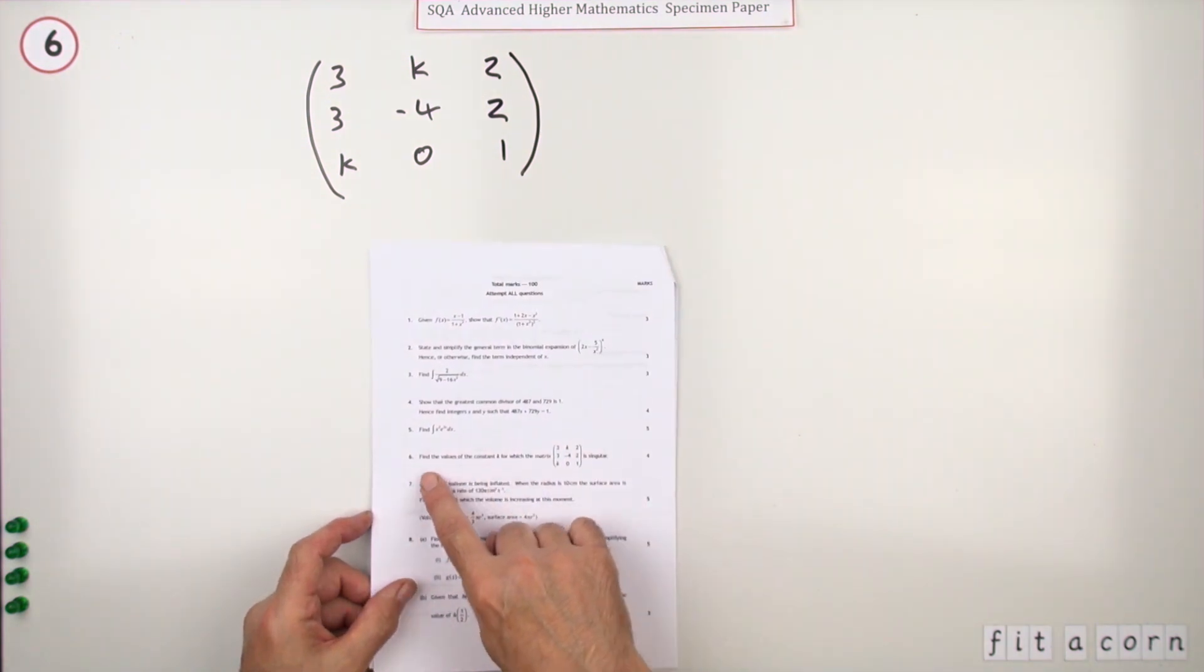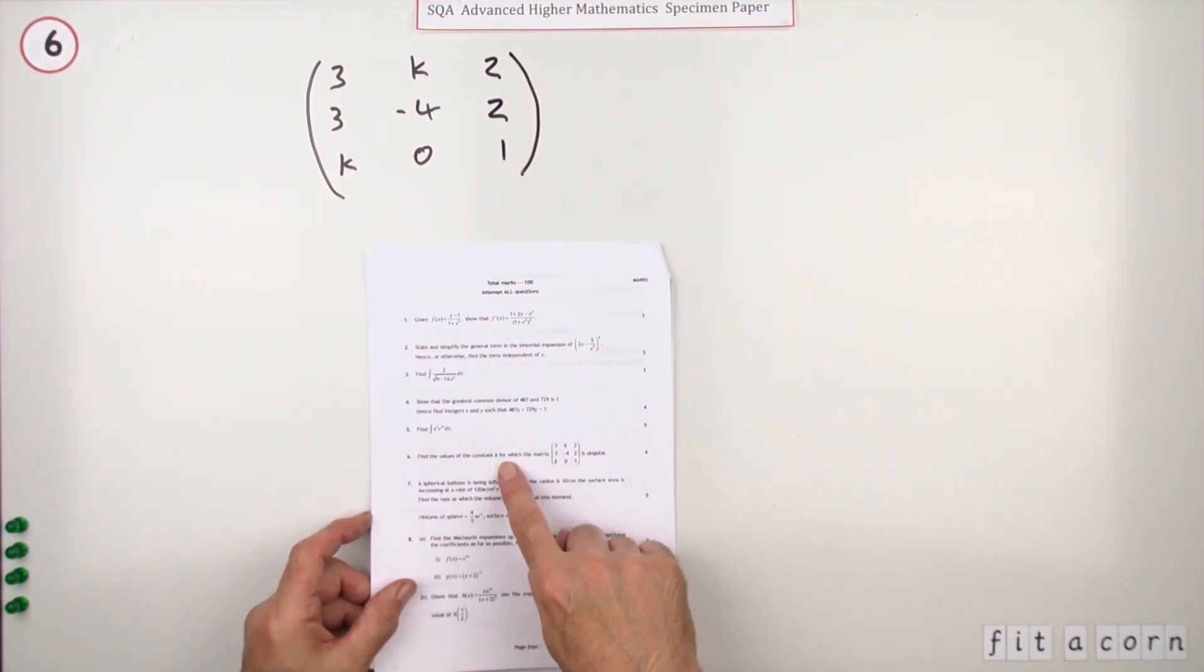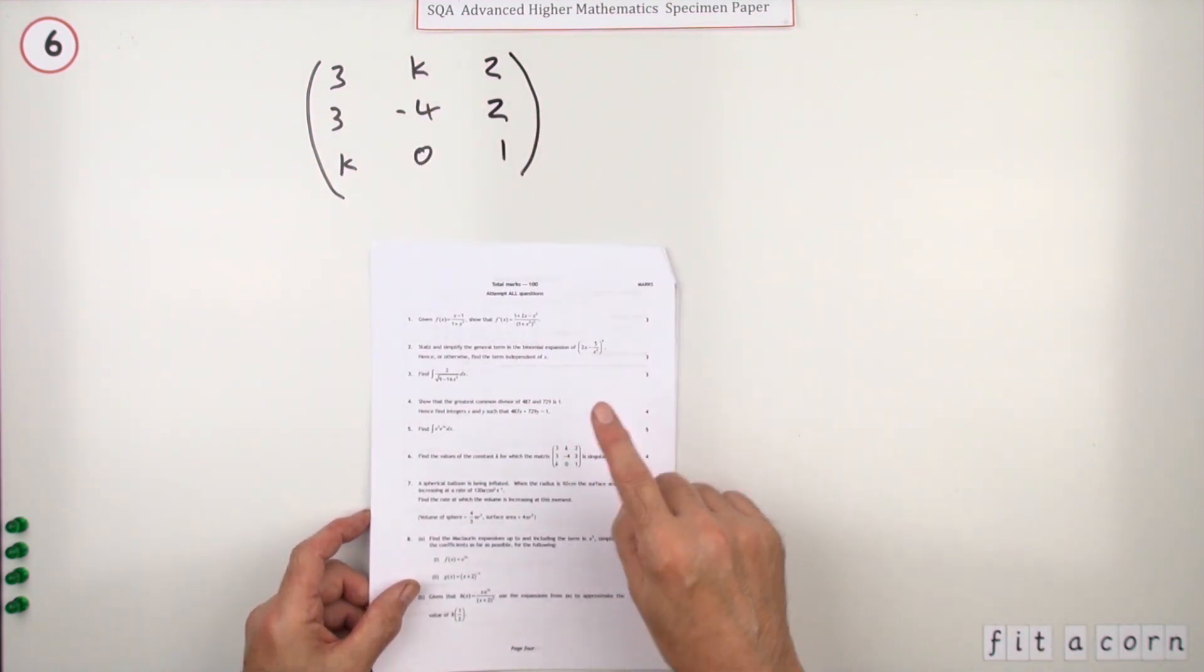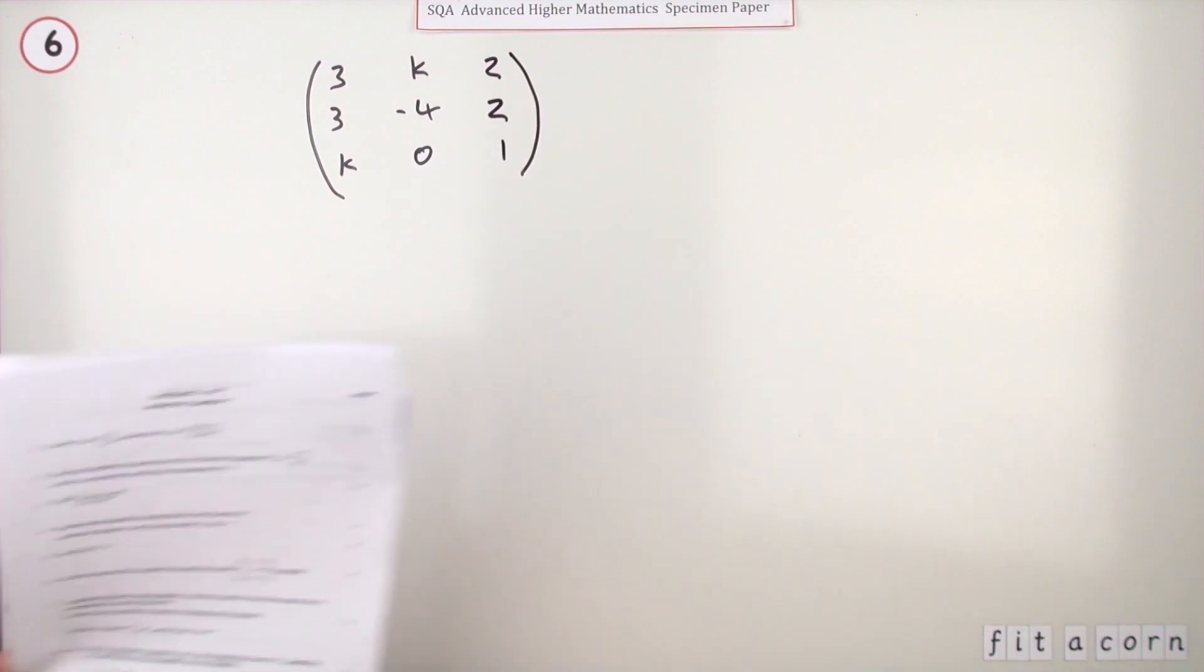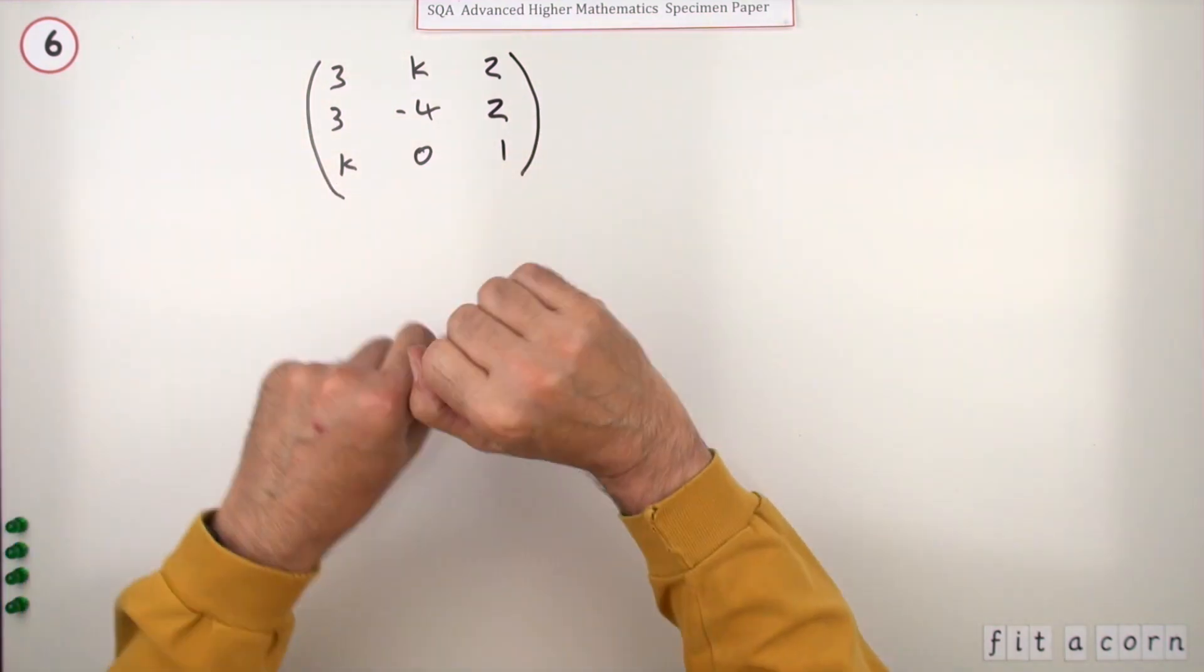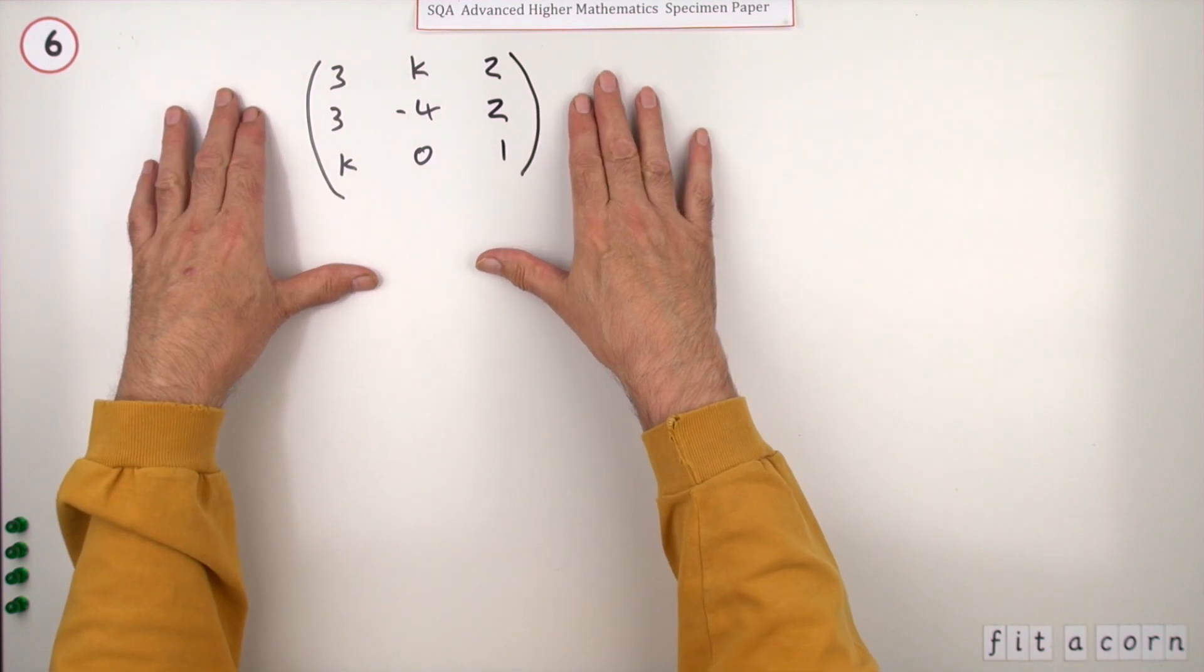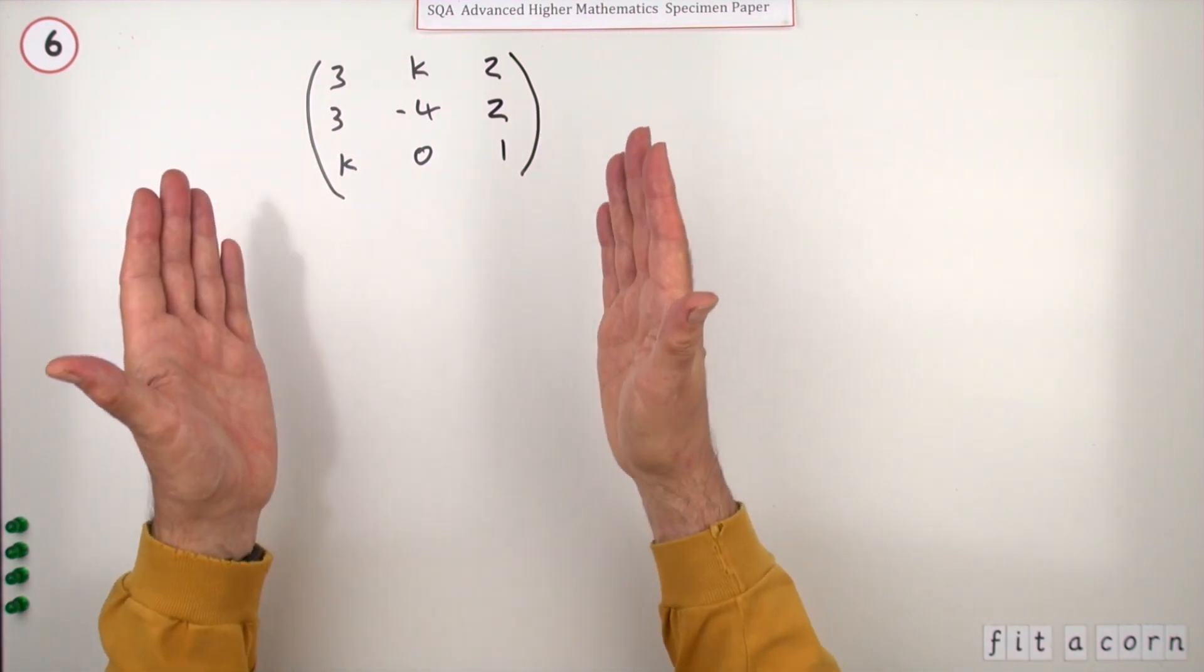Number six: find the value of the constant k which appears in this 3x3 matrix for which the matrix is singular. Now singular means this matrix has no inverse, in other words its determinant should come to zero. So all you're going to do here is work out its determinant and solve that equation equal to zero.